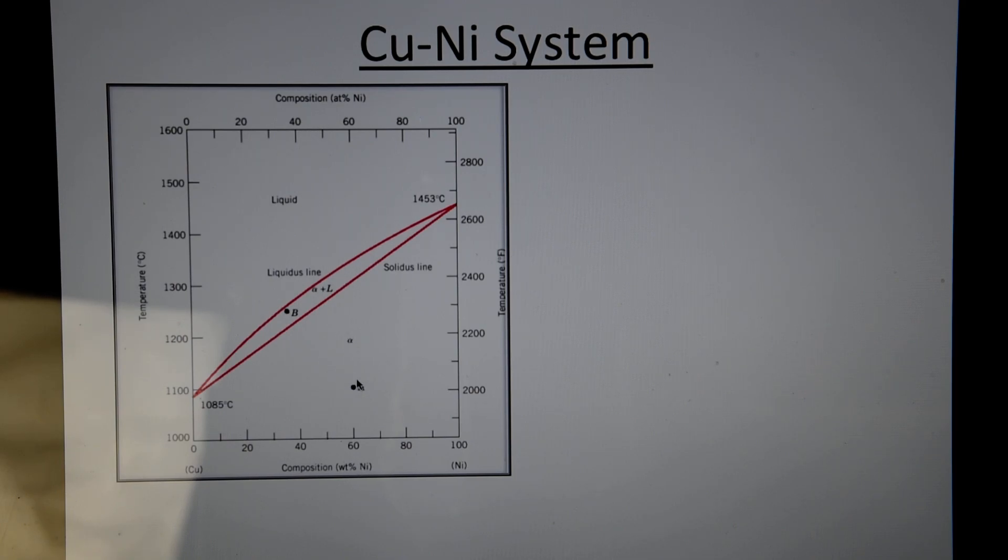This region here, where you have point A, is called a solid solution and it's denoted by alpha. This region in the middle here is called the alpha plus liquid. So it's both solid and liquid. This is where the melting is taking place. And above here is called the liquid region.